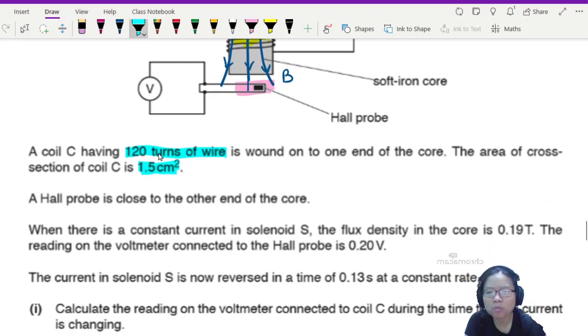Cross-sectional area of the coil is 1.5 cm squared. I smell some flux calculation ahead of me. In my near future, I ask my crystal ball. Or I ask myself, we have done enough past years. A hall probe is close to the other end. When there is a constant current in the solenoid S, the flux density in the core is 0.19 tesla. The reading on the voltmeter connected to the hall probe is 0.20 volts.